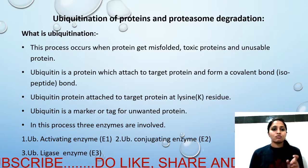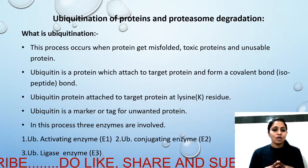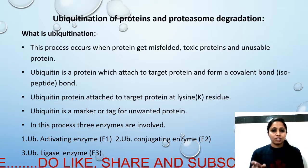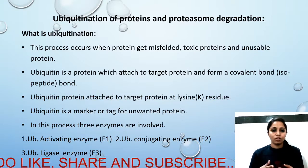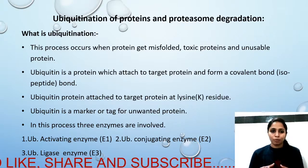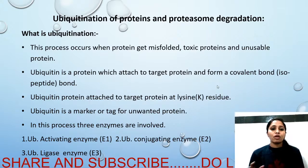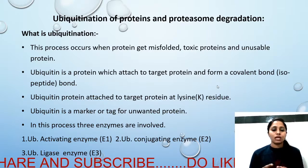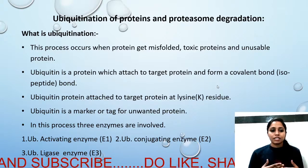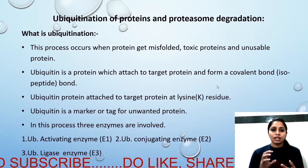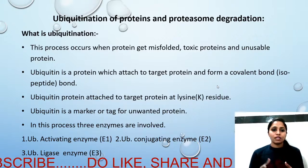The target protein has a lysine residue on it, and ubiquitin is attached on top of that lysine residue. When ubiquitin is attached to the target protein, it forms a covalent bond. Specifically, it is attached at the glycine residue of ubiquitin, also via a covalent bond.